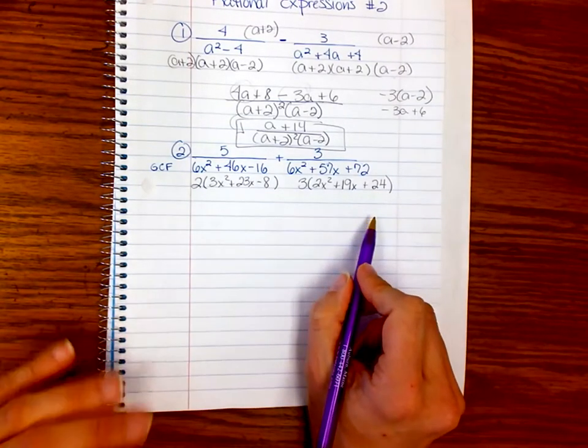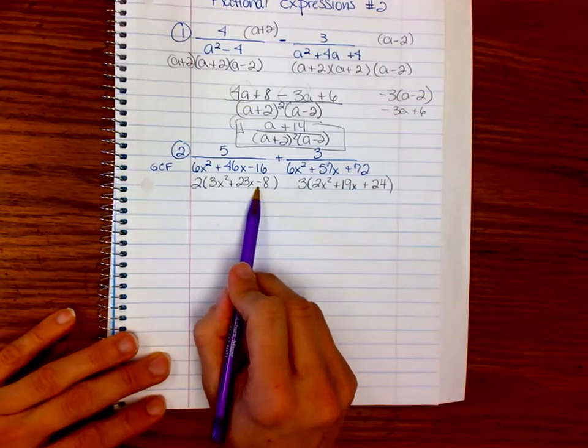Okay, so these are just the denominators. Now, there's nothing in common yet. So, these are trinomials, so I'm going to factor those next.